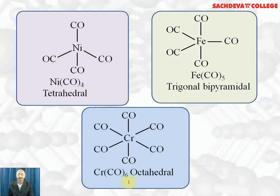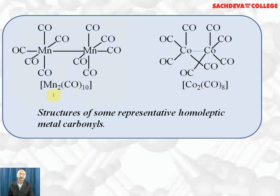Some of these complexes form dimers. Pentacarbonyl manganese(0) forms a dimer called dimanganese decacarbonyl, Mn₂(CO)₁₀, where each manganese is trigonal bipyramidal and there is a Mn–Mn bond. Similarly, tetracarbonyl cobalt(0) also exists as a dimer, which is named dicobalt octacarbonyl, Co₂(CO)₈.